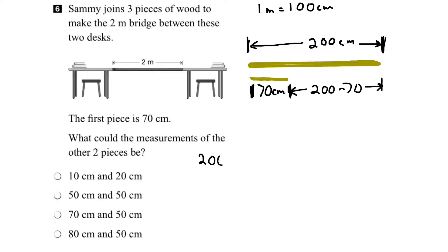So 200 minus 70, well, we can 0 minus 0 is 0. And what we're left with is 20 minus 7. Well, what would we have to add to 7 to get 20? Well, that would be 13. So the answer is we can replace 200 minus 70 with 130. So the other two pieces of wood must add up to 130 centimeters.